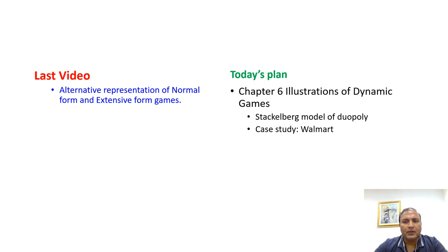As-salamu alaykum students, welcome to this new video. In the previous video we were doing alternative representations of normal form games and dynamic games. The plan for today's video is that we will be talking about illustrations of the dynamic game, we will be doing the Stackelberg model of Duopoly which we can solve by subgame perfect Nash equilibrium, and then I will show you a case study of the Walmart dynamic game.